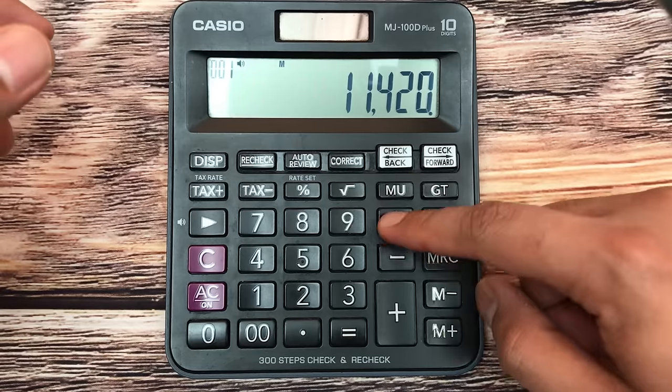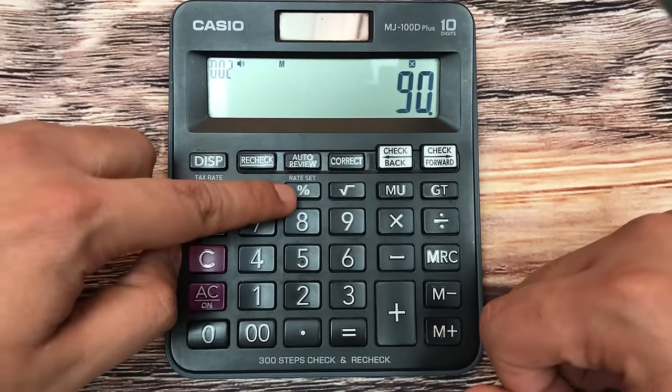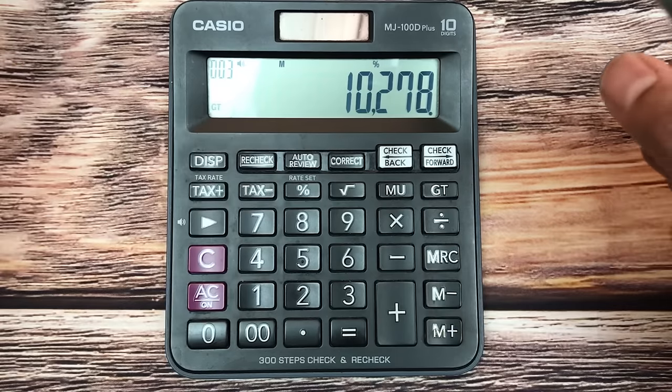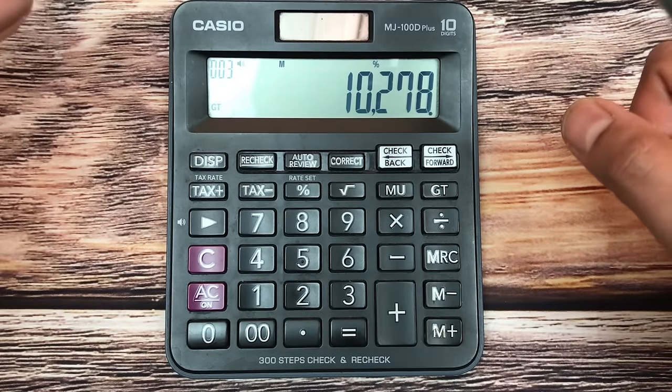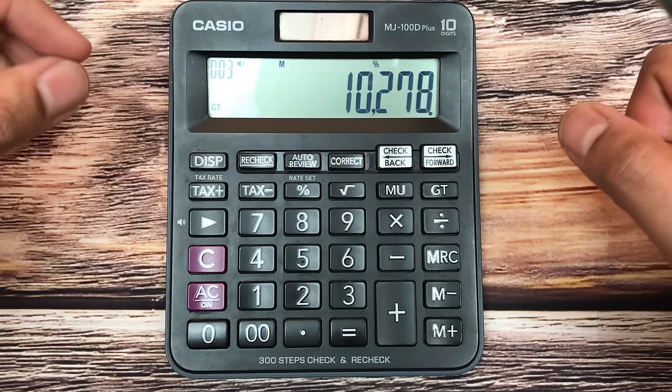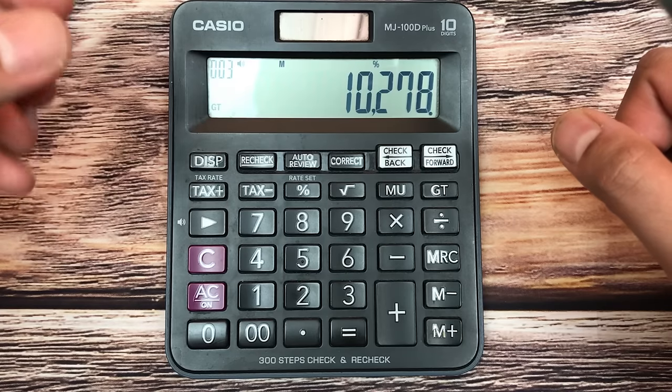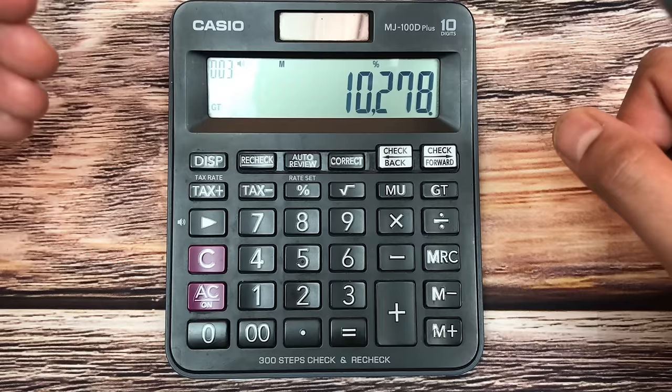Here is your final answer. After 10% discount, you have to pay 10278. Your original price was 11420, and after 10% discount, you have to pay 10278.